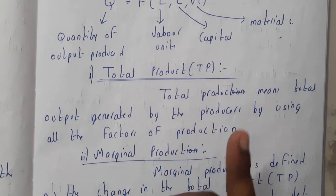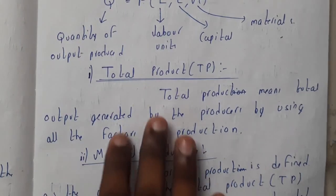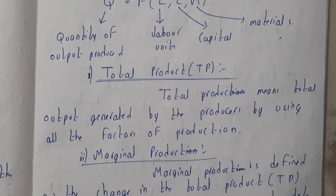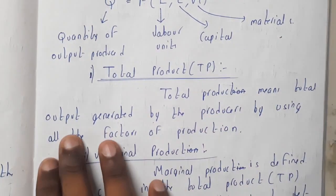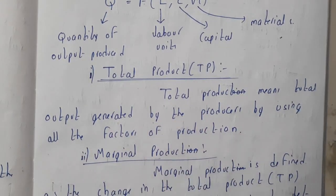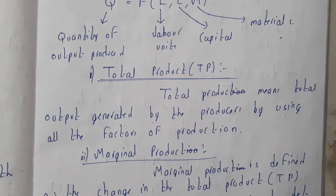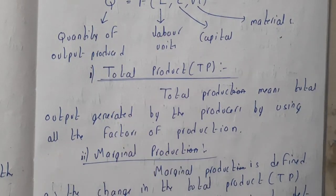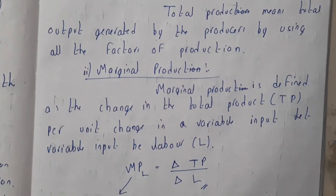There are three concepts: total product, marginal product, and average product. Total product is the total output generated by using all the factors of production. So by using all the factors together you produce a product — that is your total product.